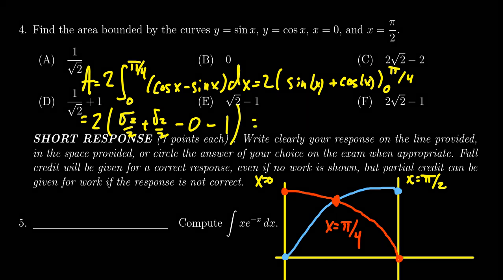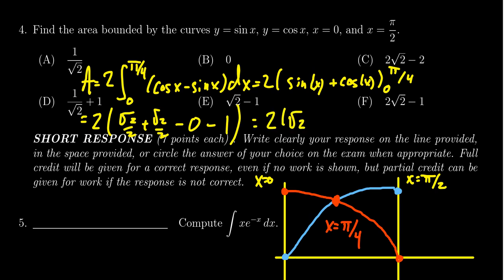So simplifying this, we get two times the square root of two minus one. If you distribute that two, you would get two root two minus two. And so we see that the correct answer is going to be choice C, indicated right here.